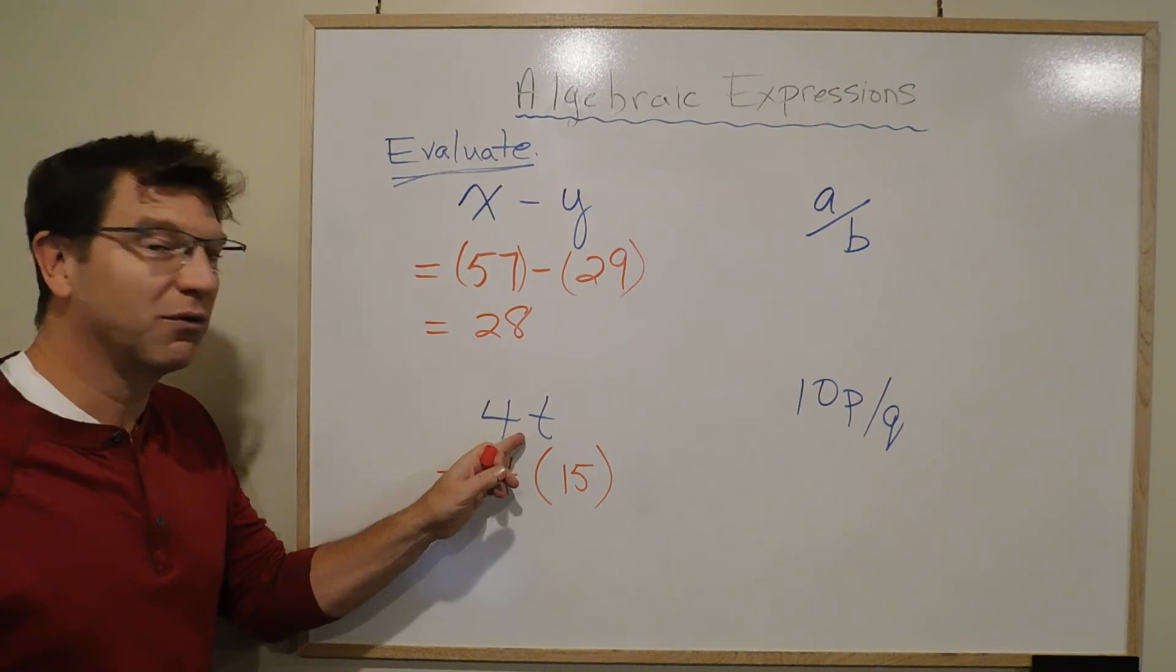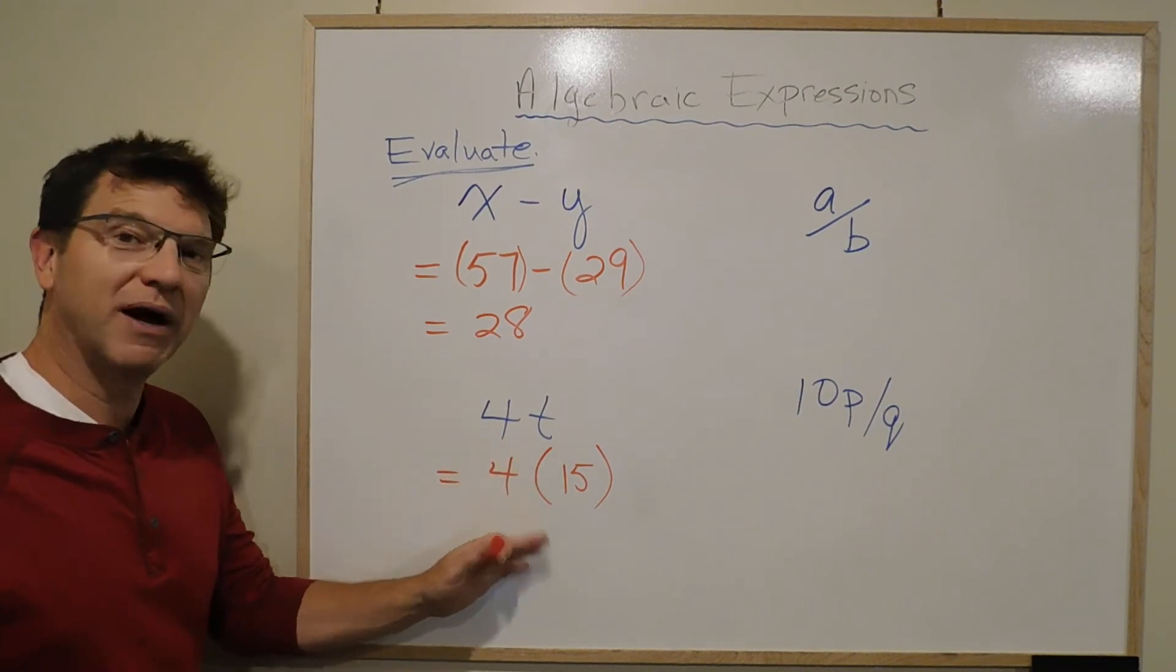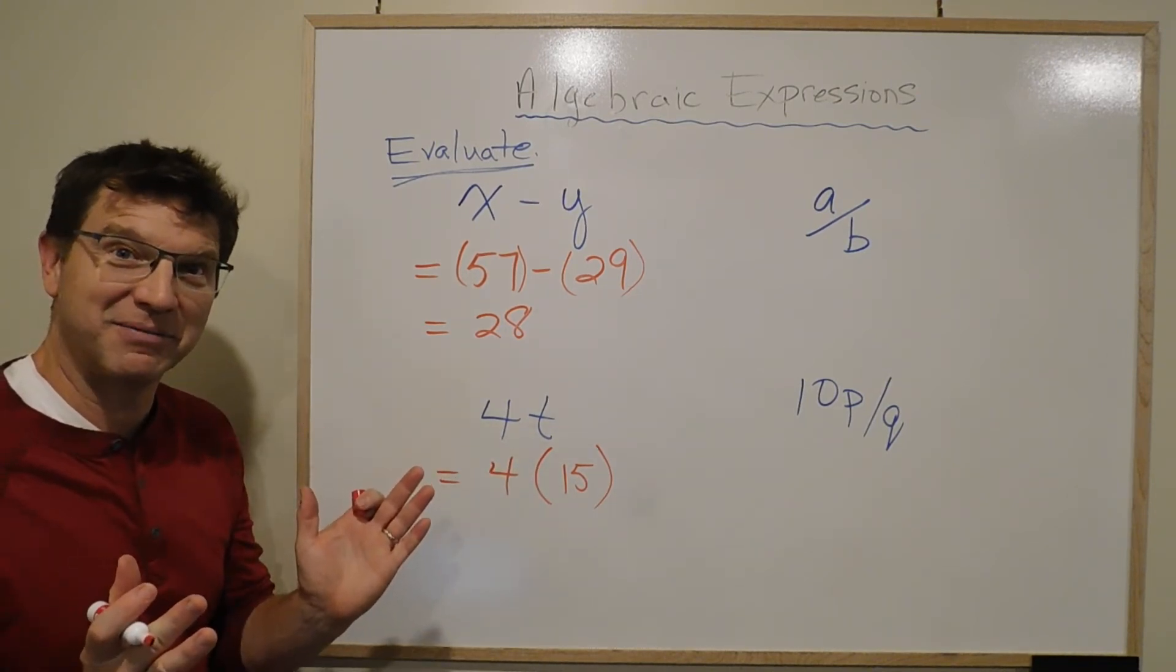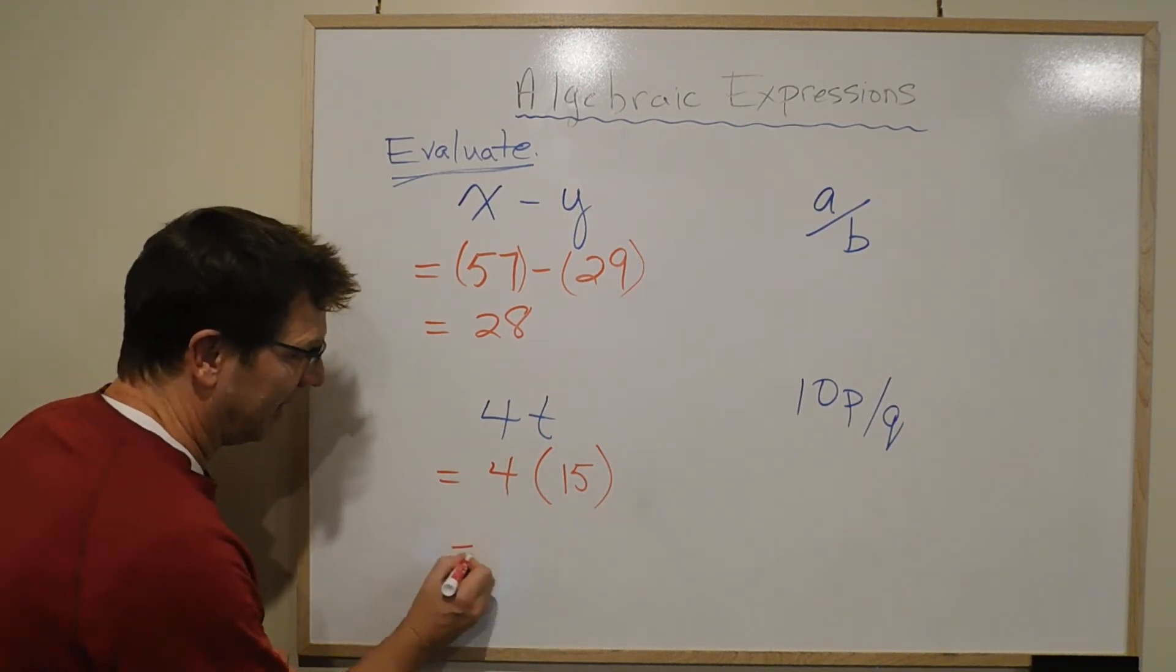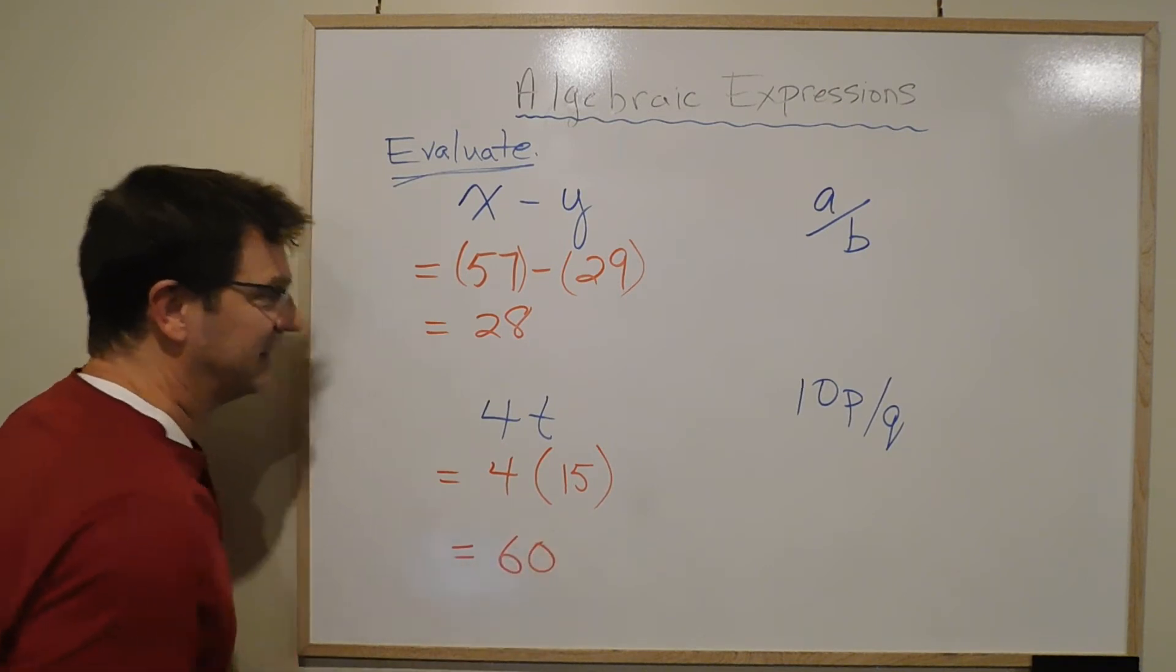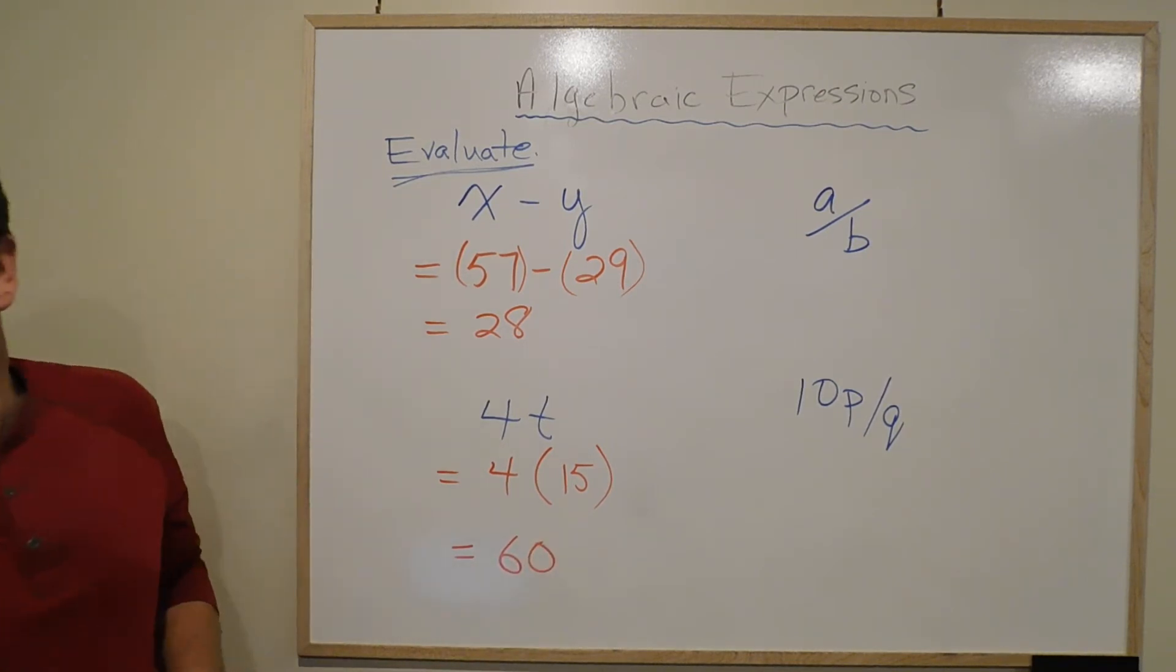Here's where the bracket shows up very useful, because 4t really means 4 times t. If I use the bracket, well, bracket automatically means multiplication. So I can see 4 times t right away, and I get 4 times 15 is 60. And hence, we have the answer of 60.